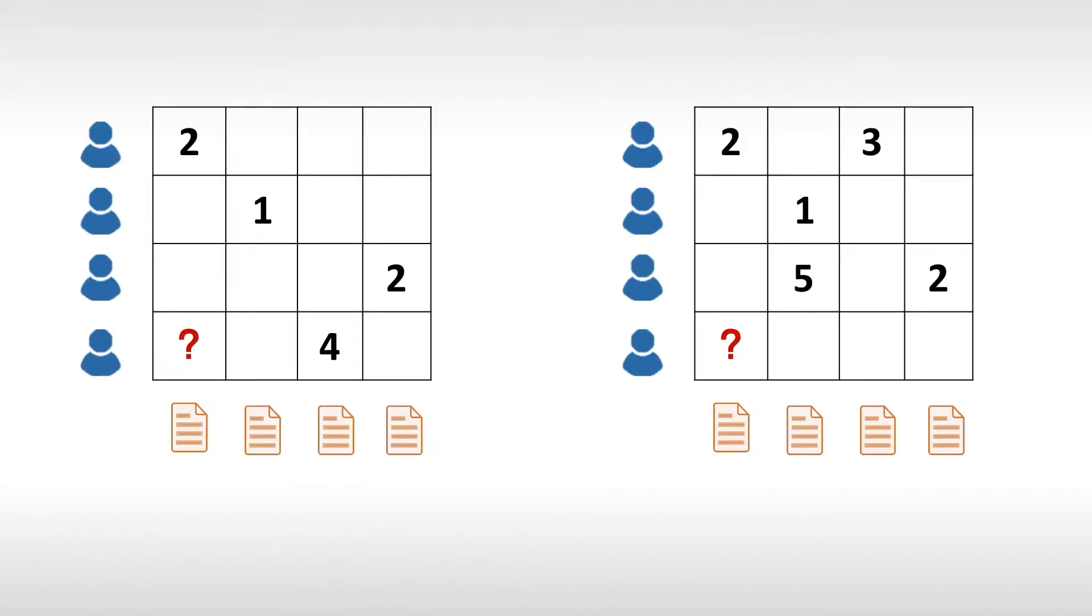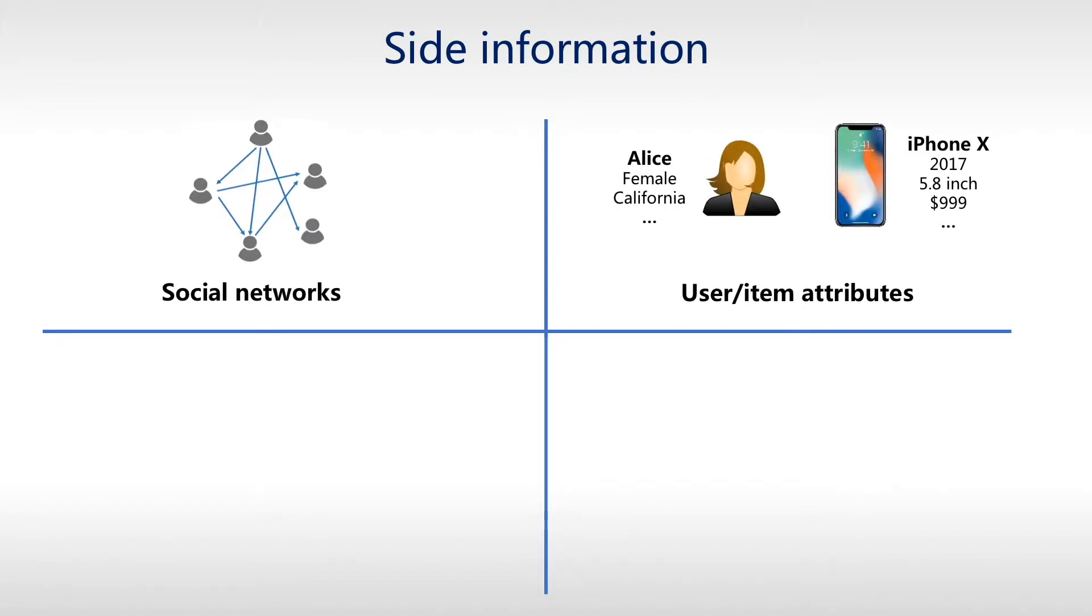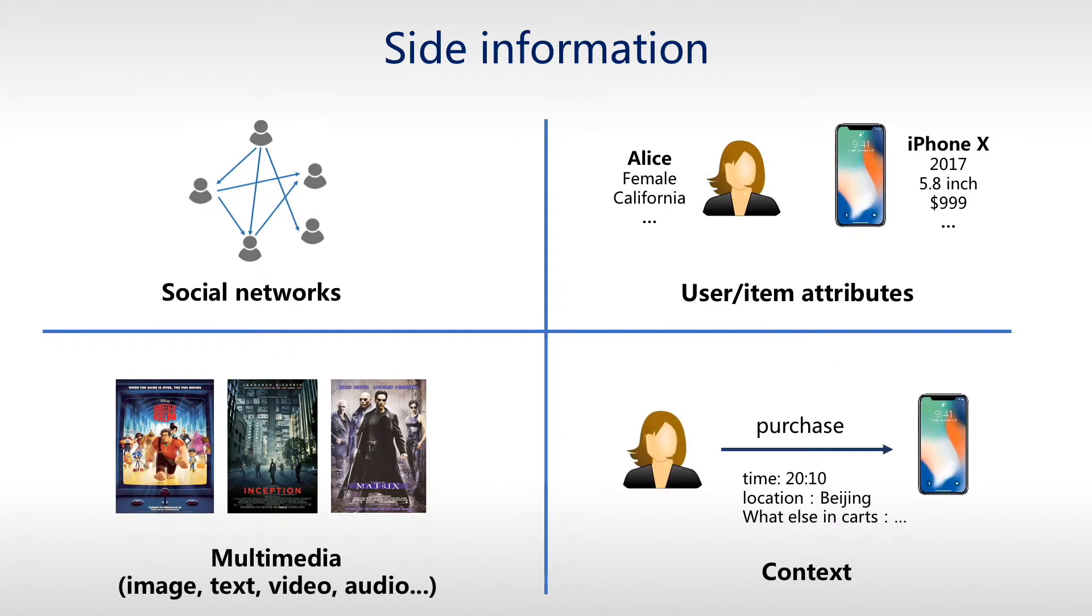Traditional collaborative filtering recommendation models usually suffer from the sparsity issue of user-item interactions and the cold start problem. This could be addressed by introducing side information such as social networks, user item attributes, multimedia, and context.